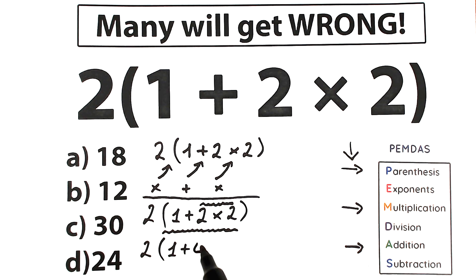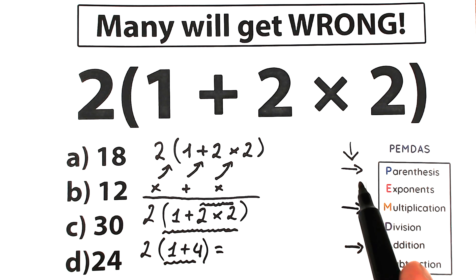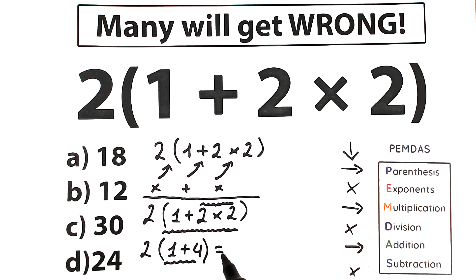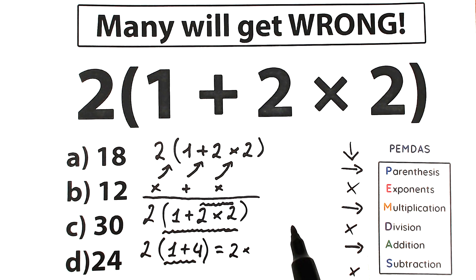So 1 plus 4 gives us 5. We don't need further order of operations here — there's no exponent, no division, no subtraction. So 1 plus 4 gives us 5, and we have 2 times 5, which gives us 10.